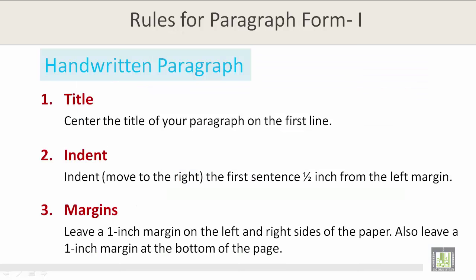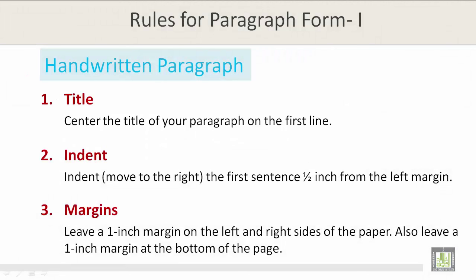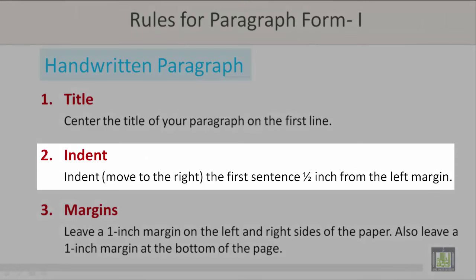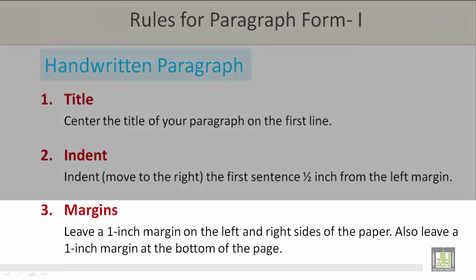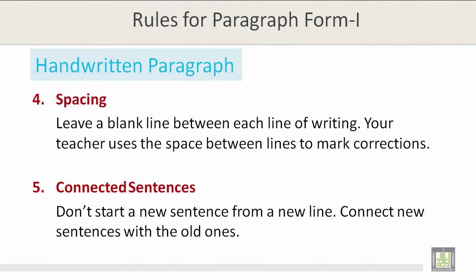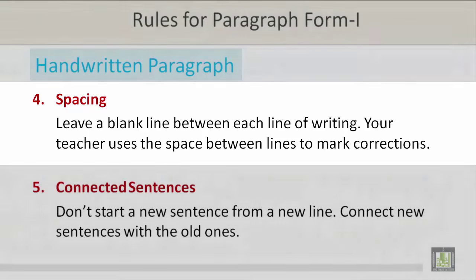Rules for paragraph form — handwritten paragraph. Number 1, Title: Center the title of your paragraph on the first line. Number 2, Indent: Indent, which means move to the right, the first sentence a half inch from the left margin. Number 3, Margins: Leave a one inch margin on the left and right sides of the paper. Also leave a one inch margin at the bottom of the page. Number 4, Spacing: Leave a blank line between each line of writing. Your teacher uses the space between lines to mark corrections.